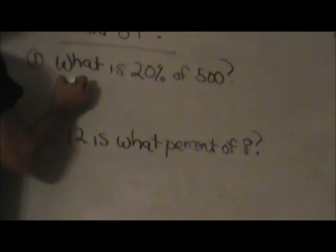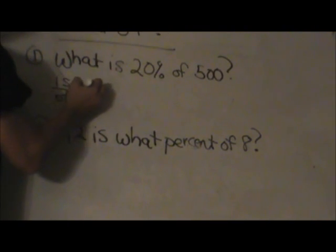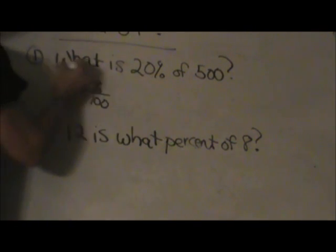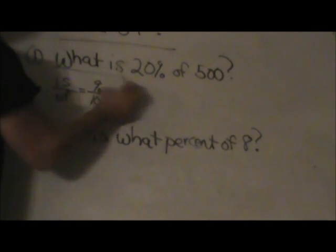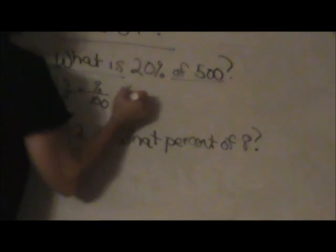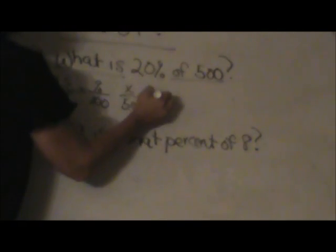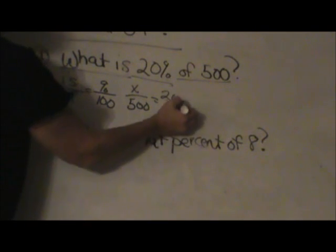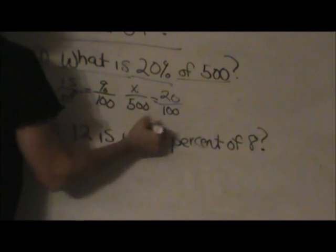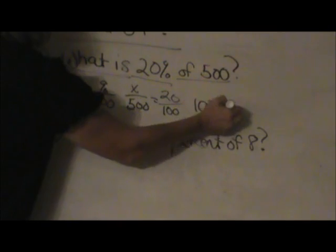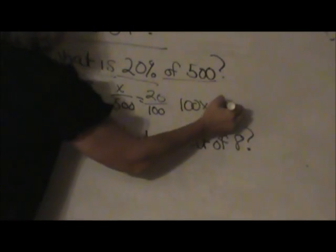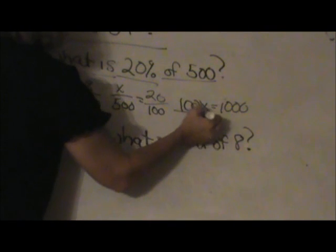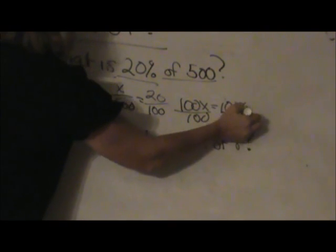So I'm going to write my formula: What is over of equals percent over 100. What is is x. Of is 500. Percent is 20 over 100. I have a proportion. I see a cross product. 100x equals 1000. Divide both sides by 100. And x is 10.